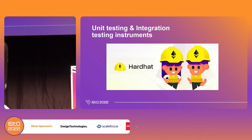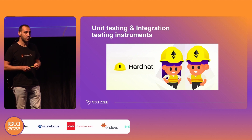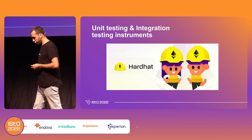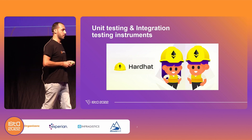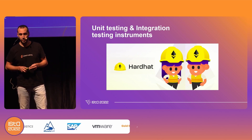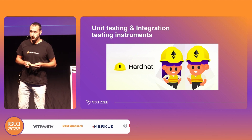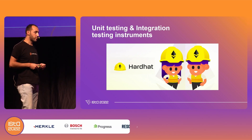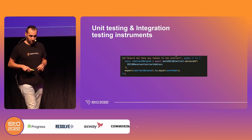Before Hardhat, there was Truffle and other kinds of libraries — we even had an internal framework we developed ourselves. Hardhat is an Ethereum development and deployment tool which you can use not only to test your smart contracts, but to compile them, deploy them, verify them, and even upgrade them. You can use different kinds of upgradability patterns together with this framework. It's built on ethers.js, and we are contributors to that library. Hardhat uses modularity so everybody can write their own modules.